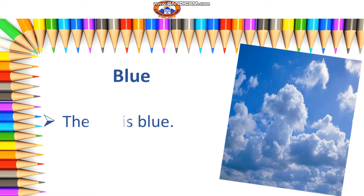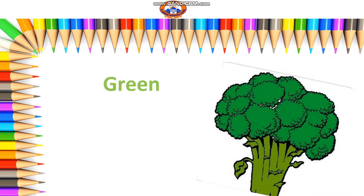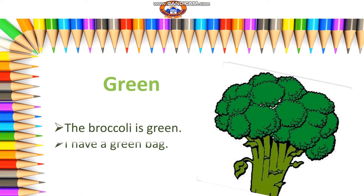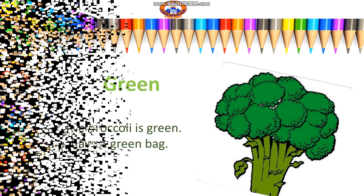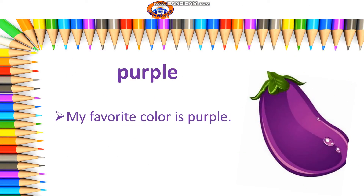Blue. The sky is blue. My cat has blue eyes. Green. The broccoli is green. I have a green bag. Purple. My favorite color is purple. The eggplant is purple.